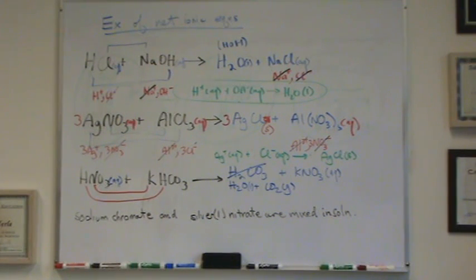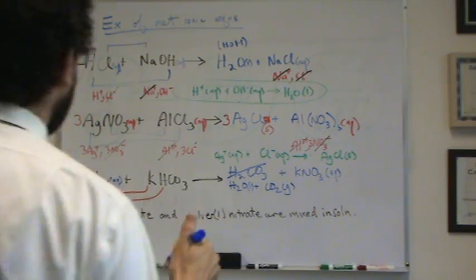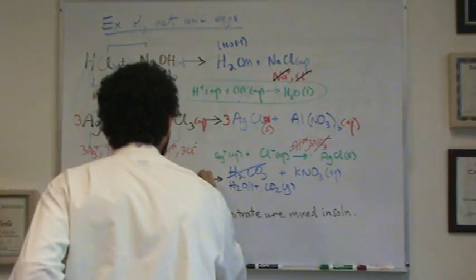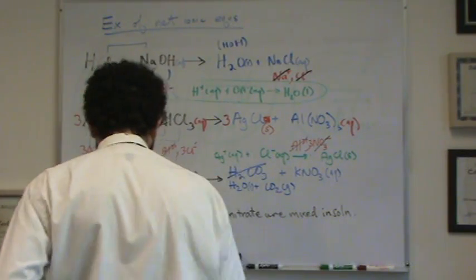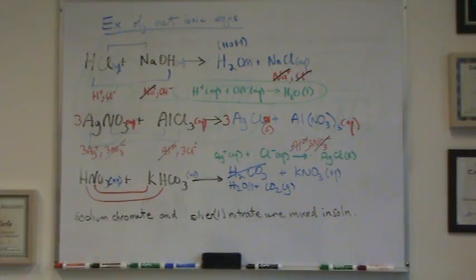Remember, you don't have to memorize the solubility rules. You just have to be able to look at it and figure it out. KHCO3, anything with a K, a potassium, that's a group one metal, according to solubility rules, is also aqueous.